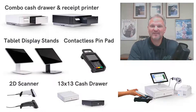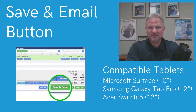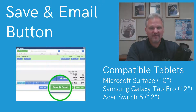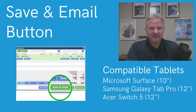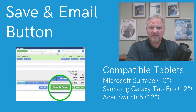Let's talk about the save and email button, as well as some new compatible tablets. As you can see in the picture, you now have the option to save the transaction and email the receipt. Keep in mind the email only works with Outlook, so if your email domain is not Outlook and you'd like this feature, give us a call — we've been developing apps for QuickBooks Point of Sale since 2003. The Samsung and Acer are now two tablets compatible with QuickBooks Point of Sale version 19, and both work with the display stands shown previously.